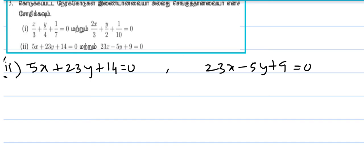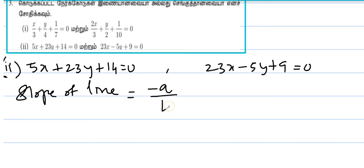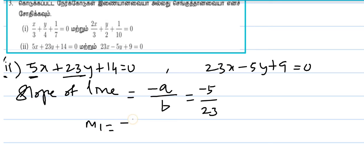The slope of a line is equal to minus coefficient of x by coefficient of y. So in this line, coefficient of x is 5, so here minus 5, and coefficient of y is 23. Therefore m1 is equal to minus 5 by 23.